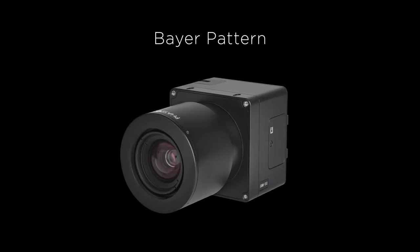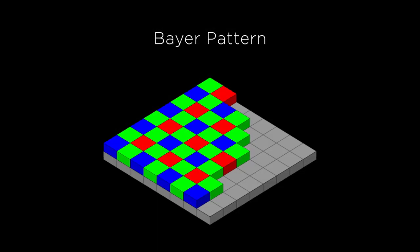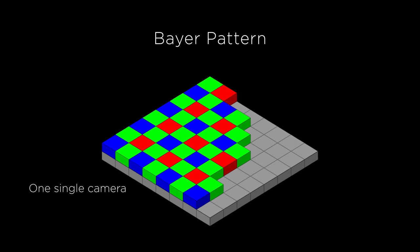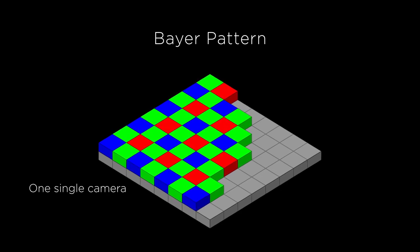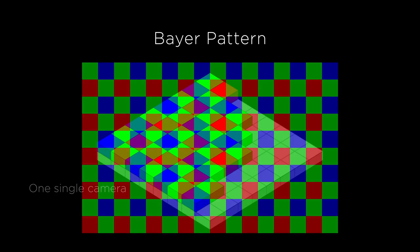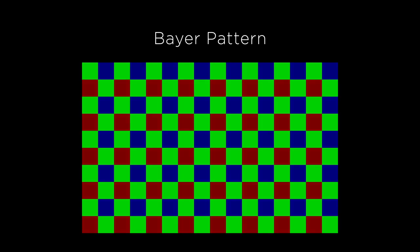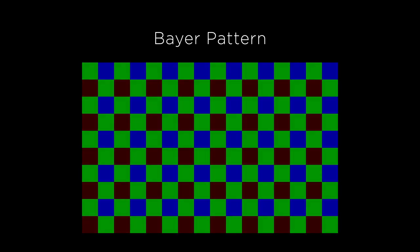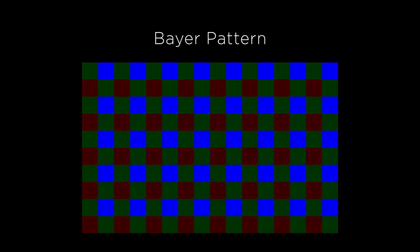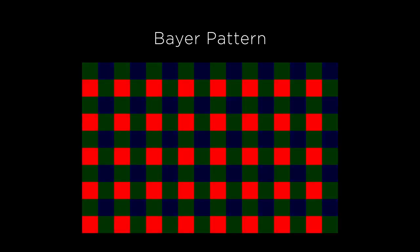In Phase 1 cameras and systems, we use Bayer Pattern image sensors. Bayer Pattern image sensors have small color filters in front of the individual pixels, so we can capture color image data directly with a single camera. With the Bayer Pattern, half of the pixels have a green filter, a quarter has a blue filter, and a quarter has a red filter.